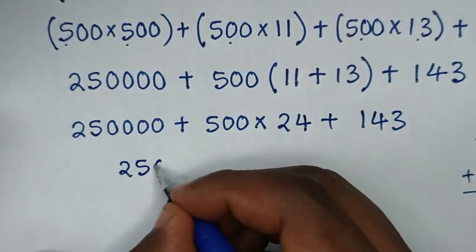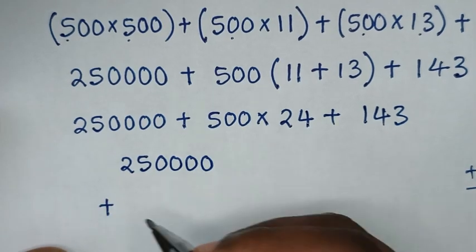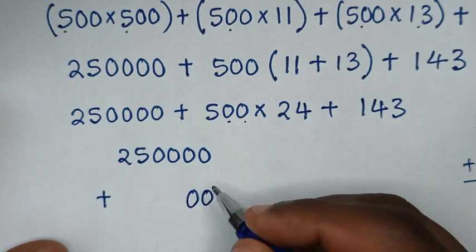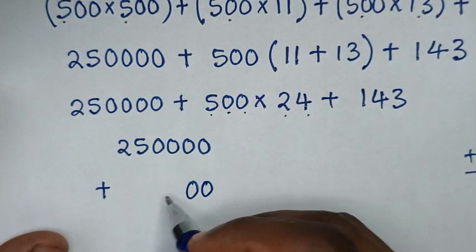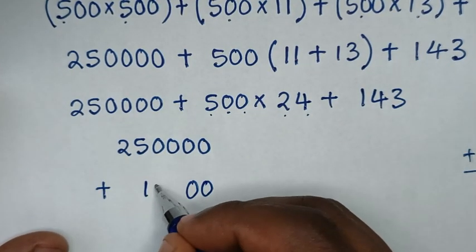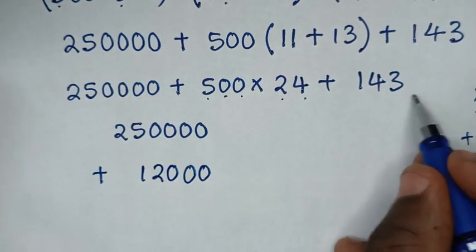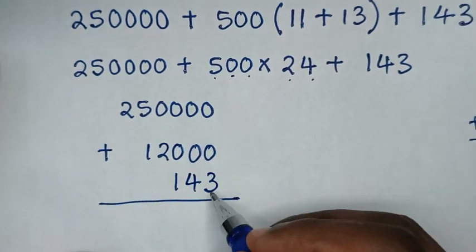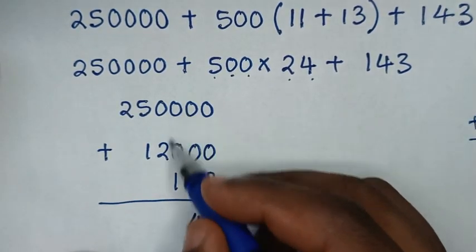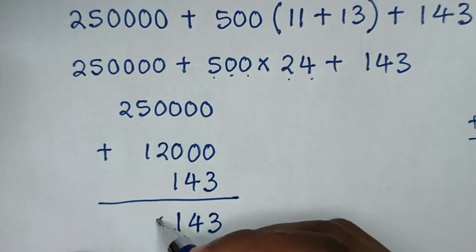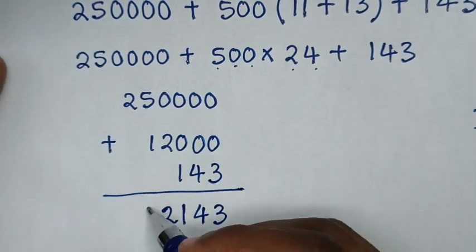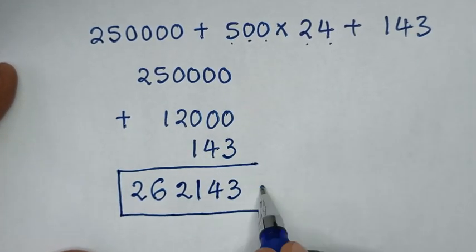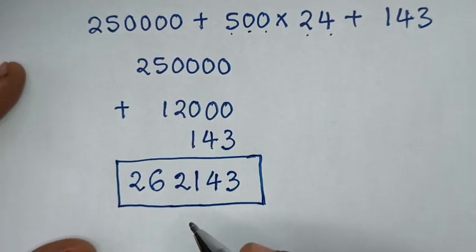So we'll take the sum: 250000 plus 500 times 24 — which has double zero — so 5 times 24 is 120, giving 12000, then plus 143. Adding these together: the final answer for 2 power of 18 minus 1 is 262143.